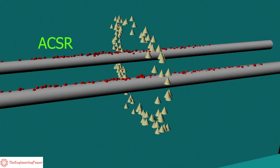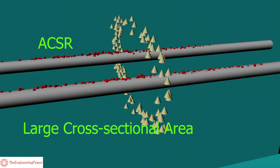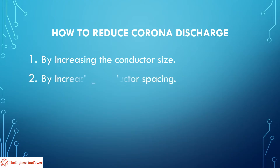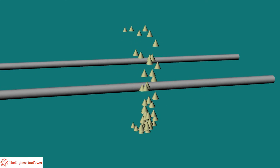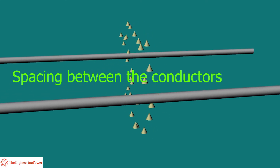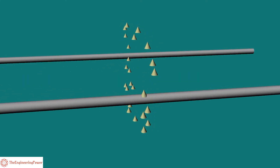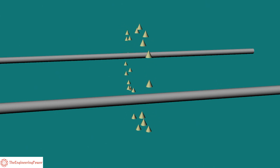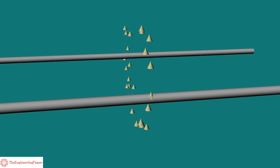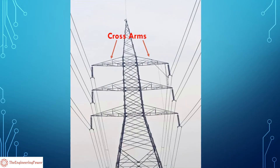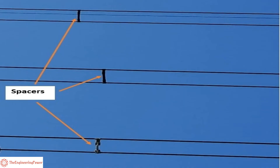The next method is by increasing conductor spacing. Corona loss can be minimized by increasing the spacing between the conductors. However, we can increase the distance between conductors only to a certain limit, because the cost of supporting structures — that is, cross arms and other hardware including spacers — will increase considerably.